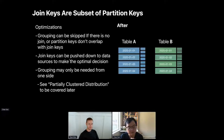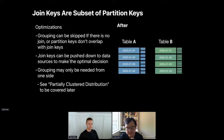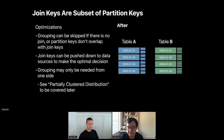Additionally, grouping may only be needed on one side of the join. We can use a new feature called partially clustered distribution, which we'll discuss later, so grouping is only needed on one side instead of both.